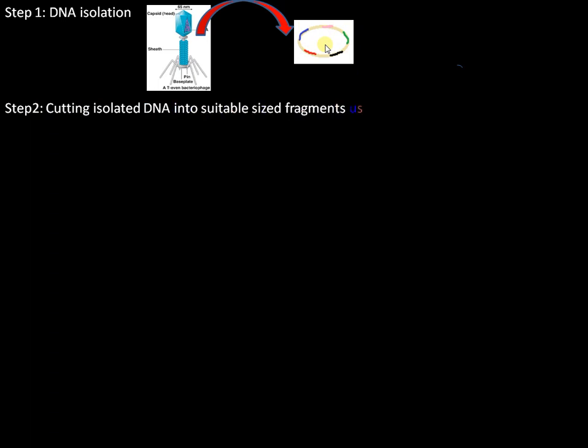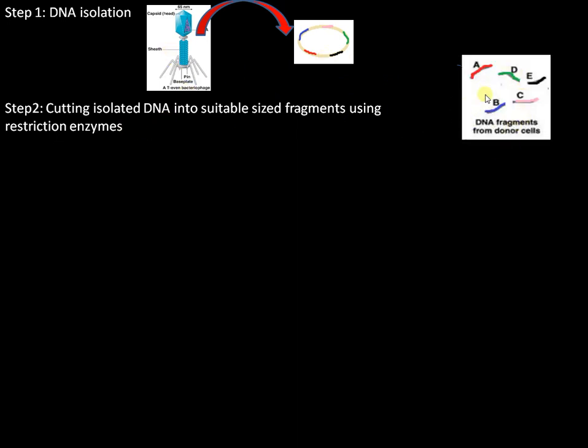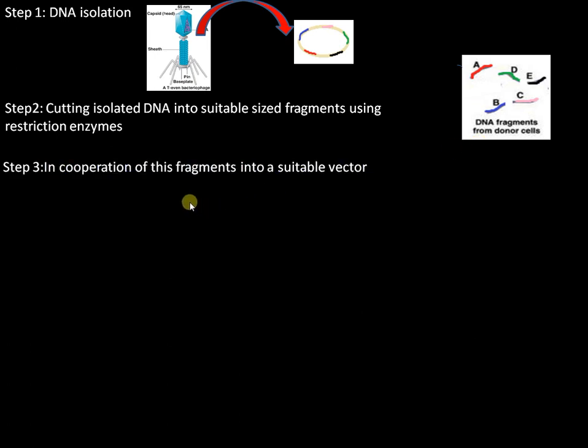Construction of a genomic library using a phage. Step one: we need to isolate DNA from the phage — so we have isolated the DNA. Step two: we need to cut this isolated DNA into suitable size fragments using restriction enzymes. Now we have the fragments, designated as A, B, C, D, and E for the sake of understanding. These are the DNA fragments from the donor cells.